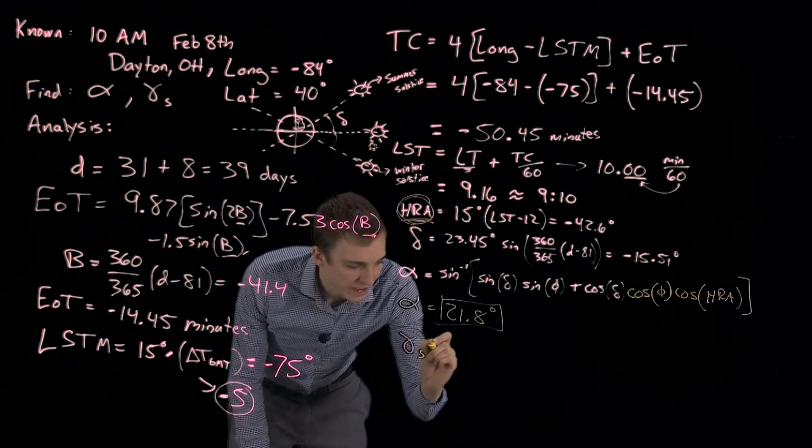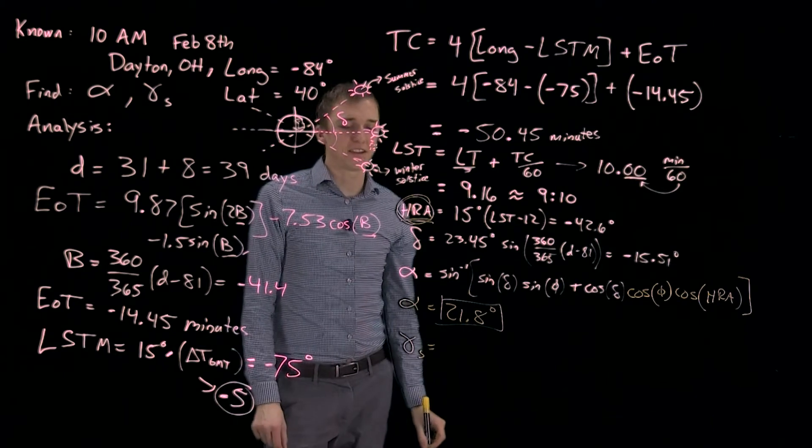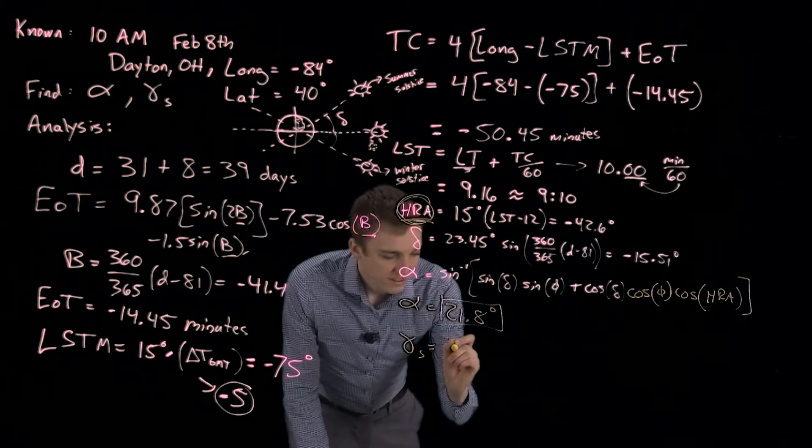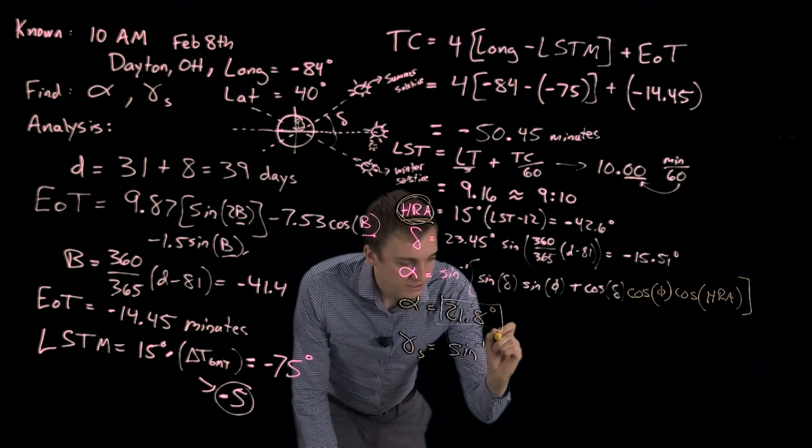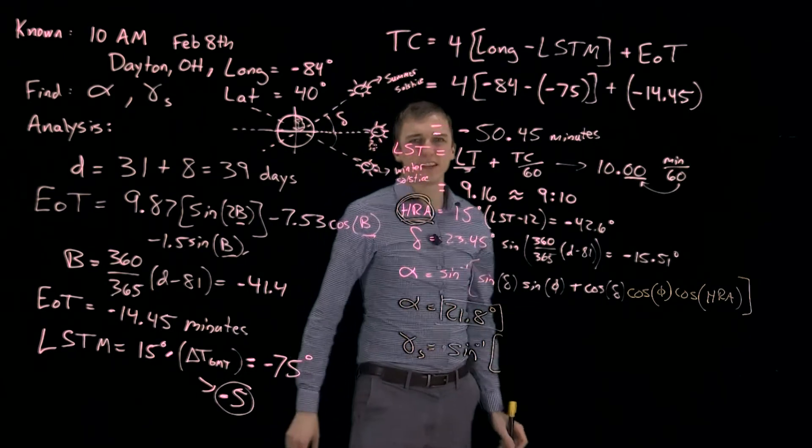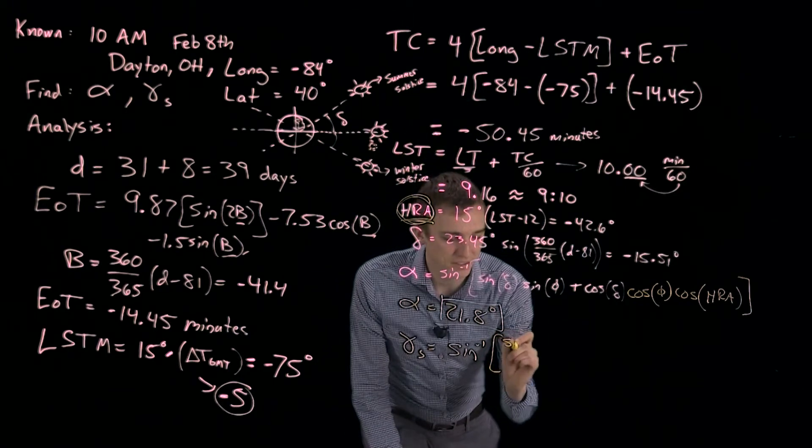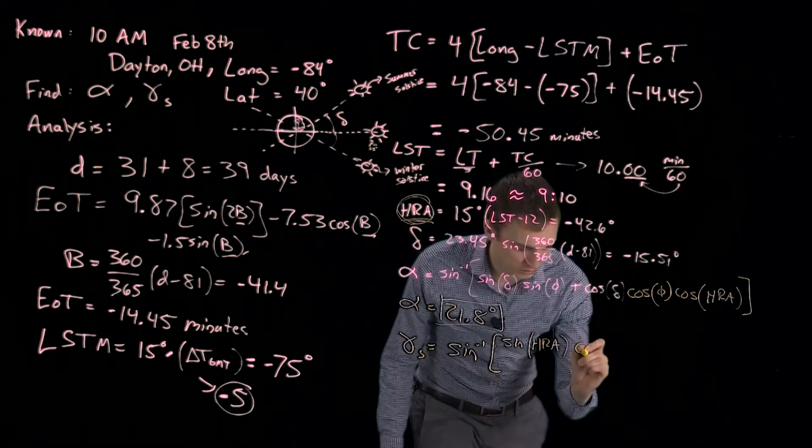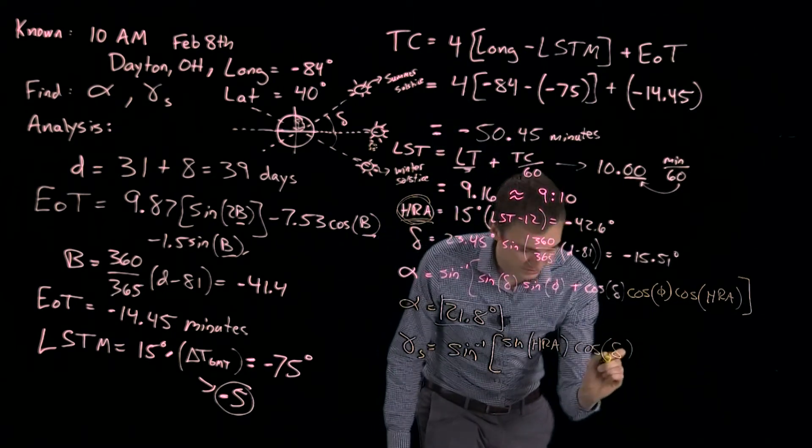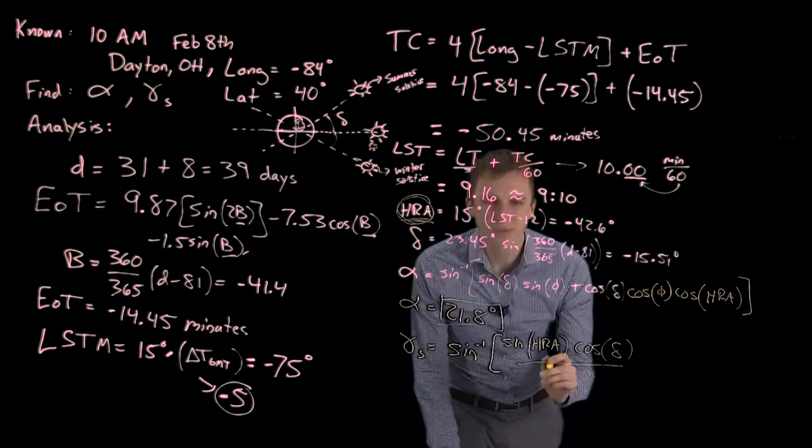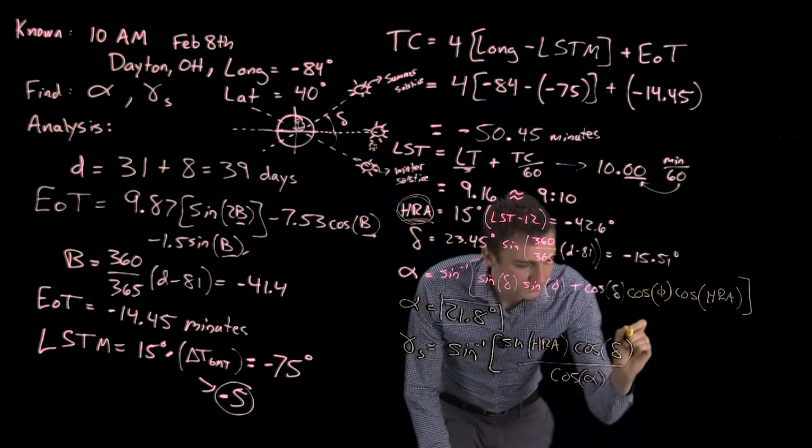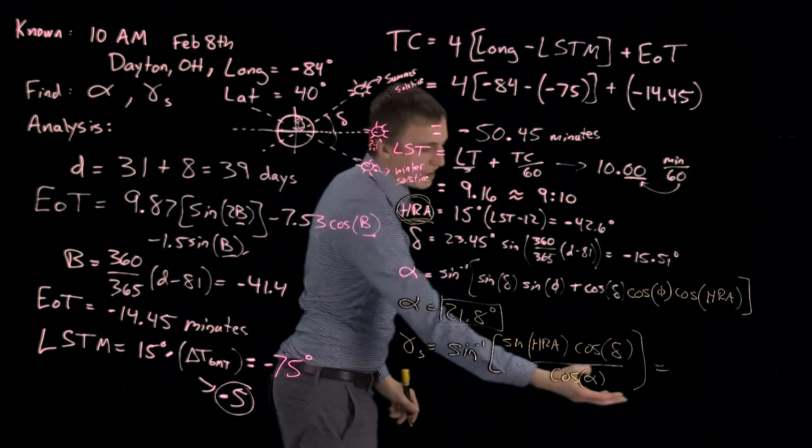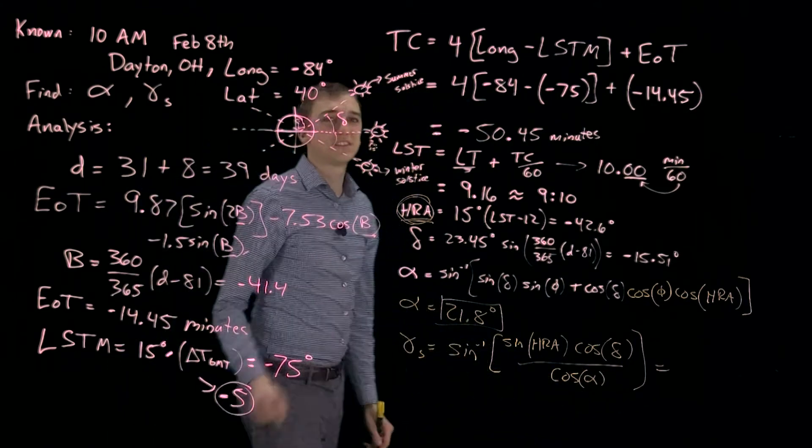Finally, we need the solar azimuth, which is, again, the angle of the sun in the horizontal plane relative to south. That we can find using a simple equation if we know the elevation. And that is the inverse sine of the sine of the hour angle times the cosine of the declination angle divided by the cosine of alpha. Okay, so this is our equation to find the solar azimuth relative to south.